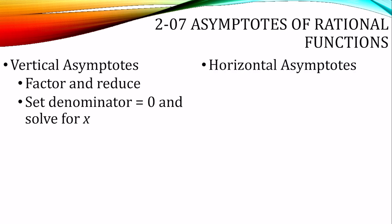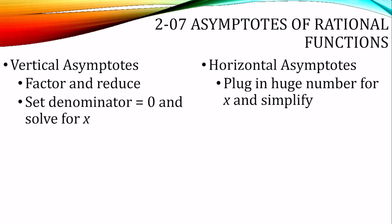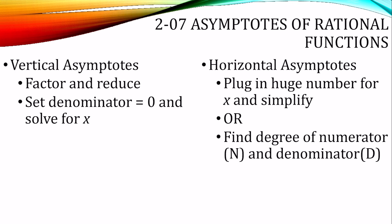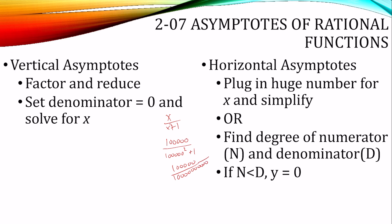Horizontal asymptotes happen at either end of the graph, either left or right. You can plug in a large number for x and simplify. Or there's a shortcut: find the degree of the numerator and the degree of the denominator. If the degree of the numerator is less than the degree of the denominator, then the horizontal asymptote will be y equals 0. For example, something like 100,000 over 100,000 squared plus 1 gives you 1 over 100,000, which is approximately 0.